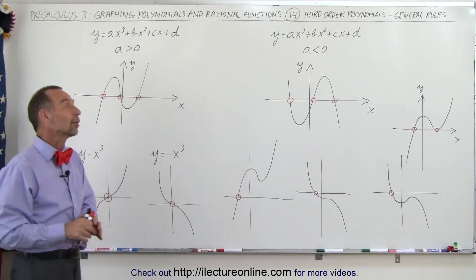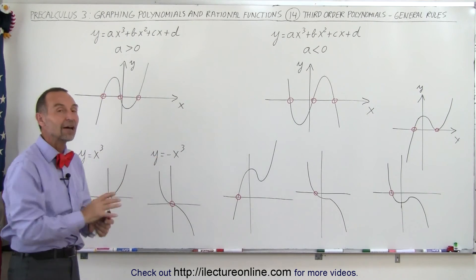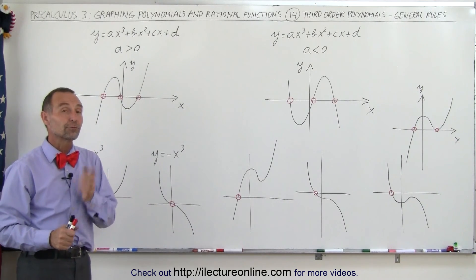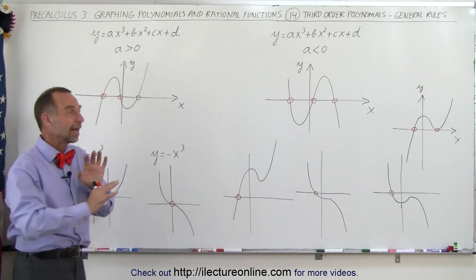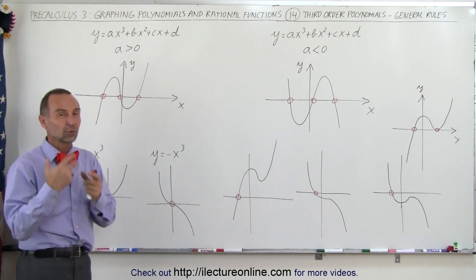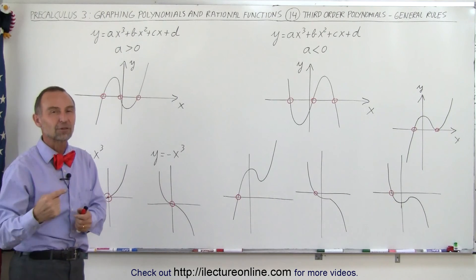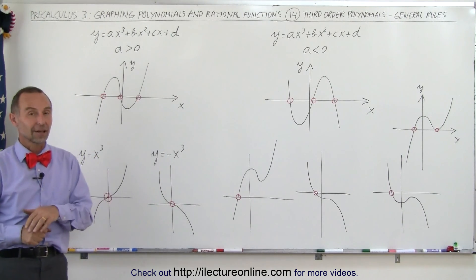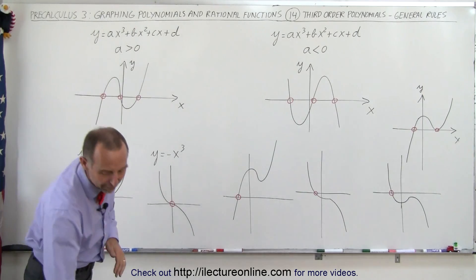Now that you understand that, we can go to the specifics of how to graph polynomials of third order. But before we do that, let's take a look at polynomials of fourth order, fifth order, sixth order, and see the generalities of what we need to know, and see the pattern. Because once we see that pattern, it makes it much easier to graph these particular polynomials.